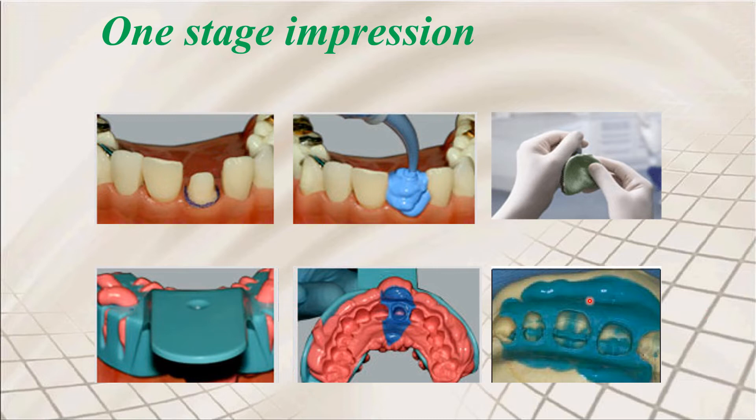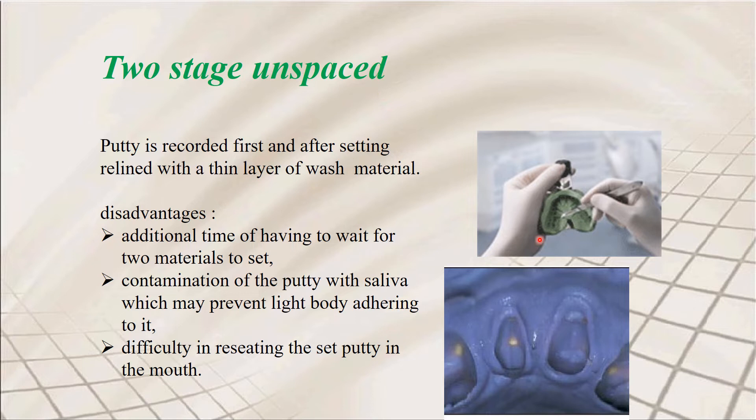Coming to the two-stage unspaced technique: the putty is recorded first, and after setting, it is relined with a thin layer of wash material (light body). The disadvantage here is the additional time required to wait for both materials to set, which can be a problem.